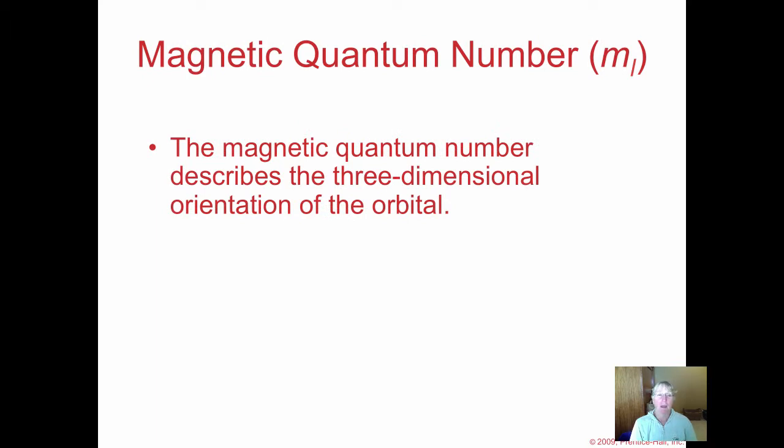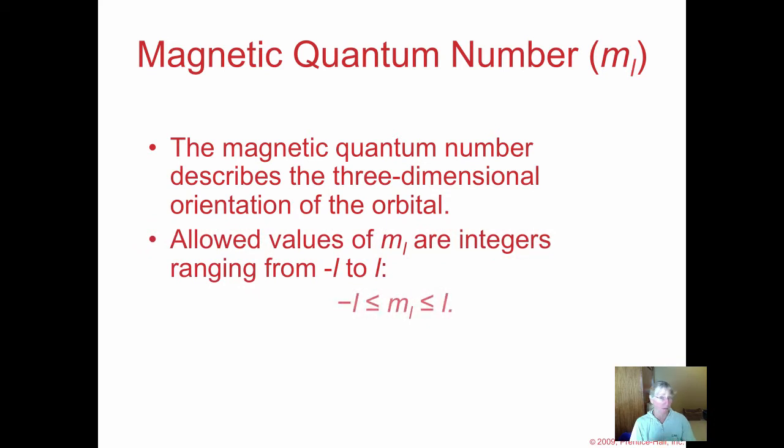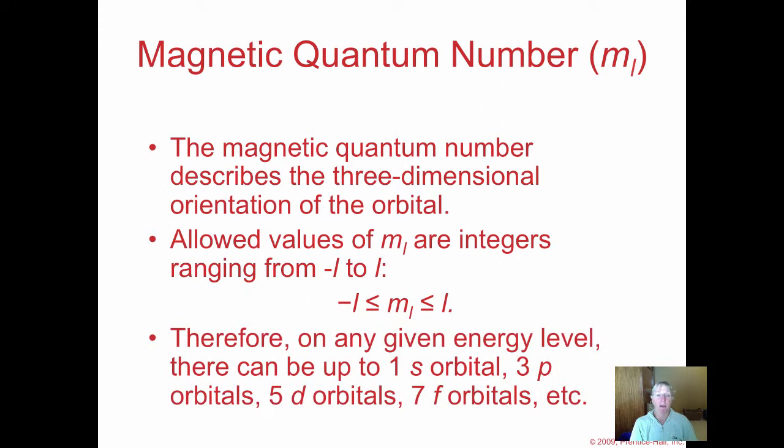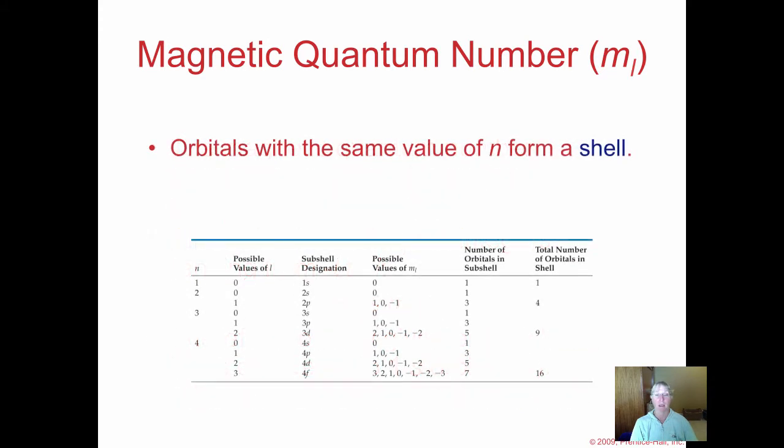The magnetic quantum number, m sub l, describes the orientation of the orbital in space. It has a range from negative l to positive l. For s orbitals, the quantum number is zero, so there's only one kind of s orbital. For p-shaped orbitals with l equals one, you can go from negative one to zero to positive one, which explains why there are three p orbitals, each oriented around the x, y, or z axis. This gives us one s, three p's, five d's, and seven f's.